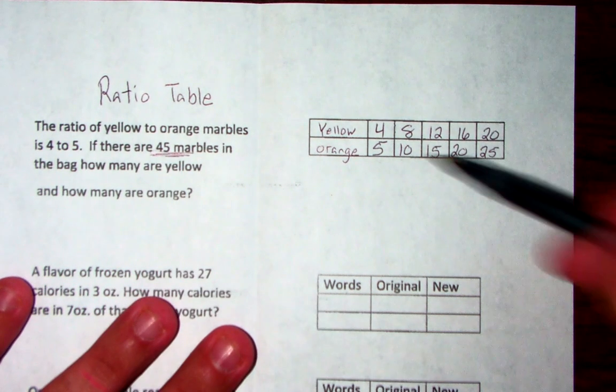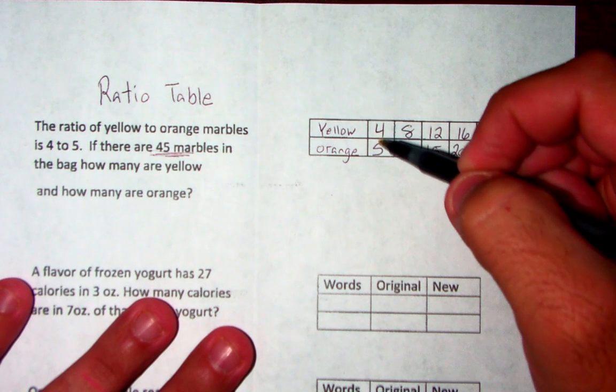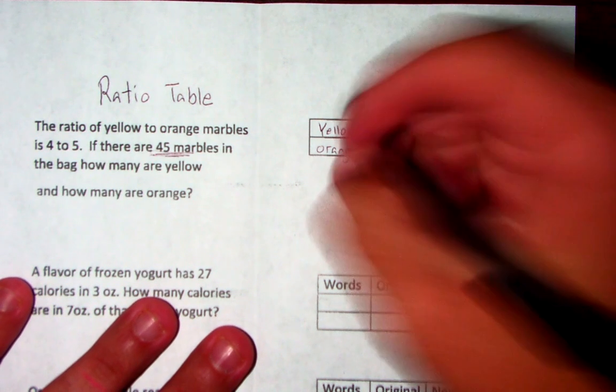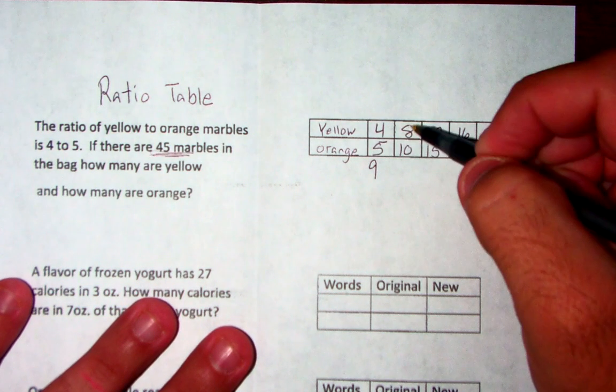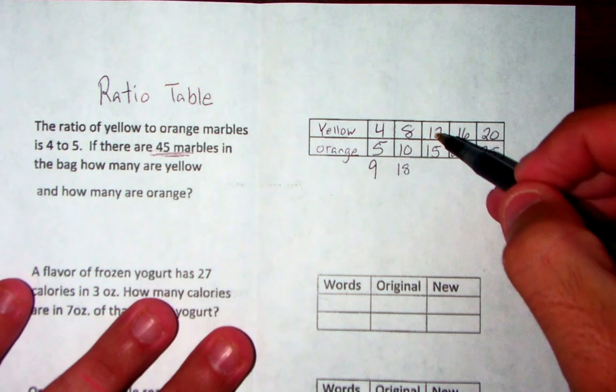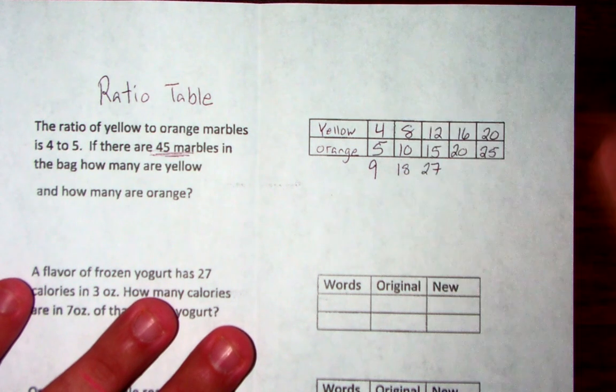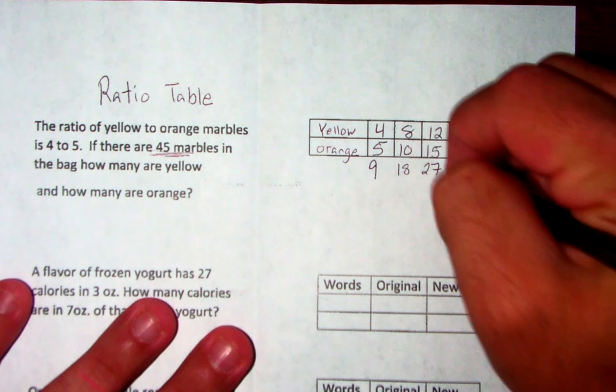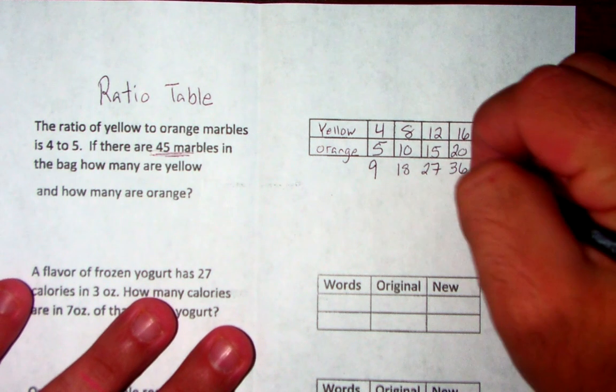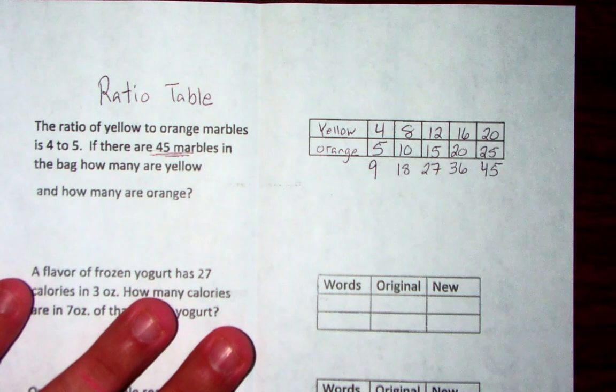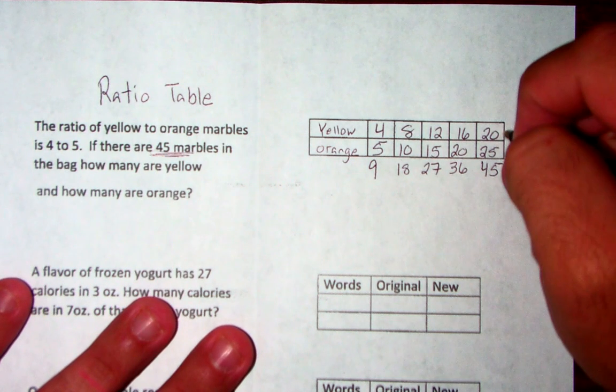Okay, but it says there's a total of 45 marbles. So what we're going to do is we're going to add down every single time. So if you have 4 marbles, 4 yellow and 5 orange, that is 9. 9 total. 8 and 10 is 18. 12 and 15 gives you 27. 16 and 20 gives you 36. 20 and 25 gives you 45.